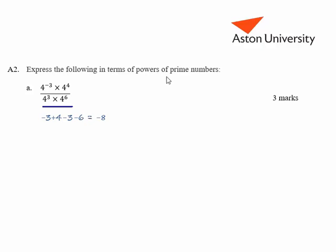We're asked to give it in terms of prime numbers and four is made up of two times two. So four to the minus eight is the same as two to the minus sixteen, which is our answer.